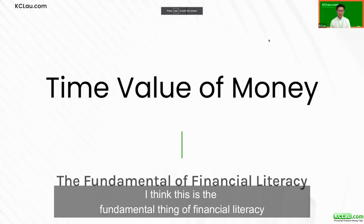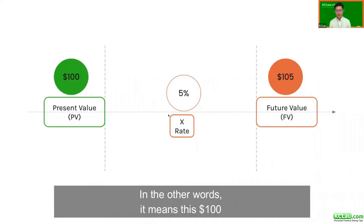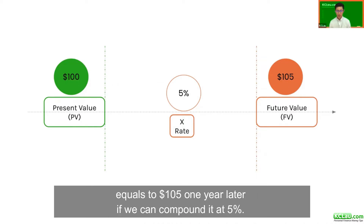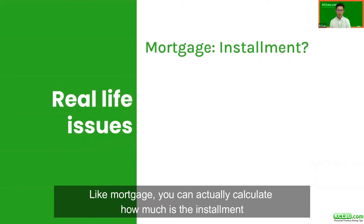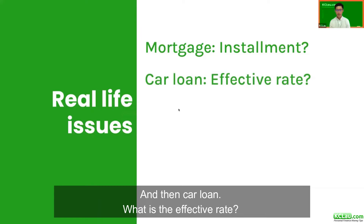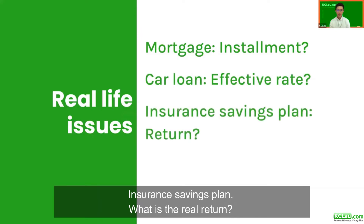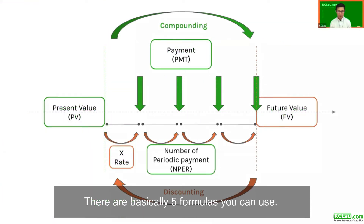Time value of money is the fundamental thing of financial literacy. Money has different value at different times — for example, $100 today equals $105 one year later if compounded at five percent. We're going to talk about real life issues like mortgage, where you can calculate the monthly installment based on the interest rate, car loans and their effective rate, and insurance saving plans and their real return.